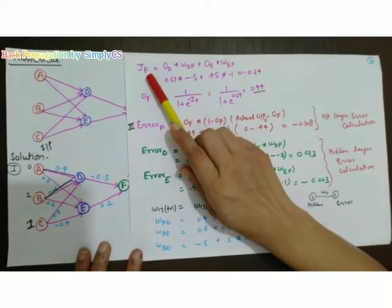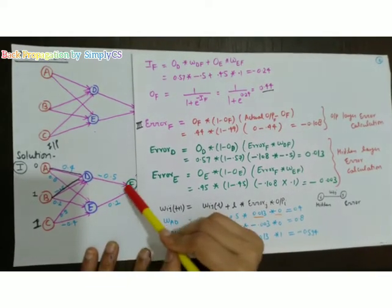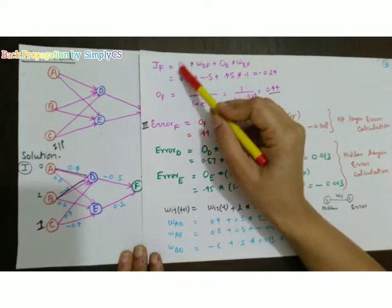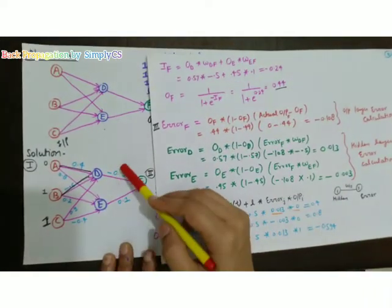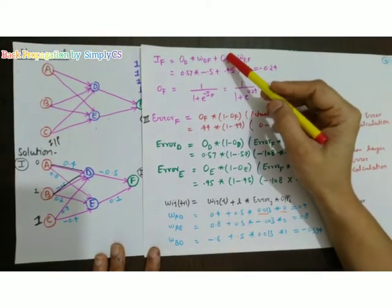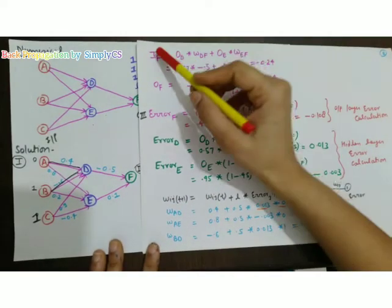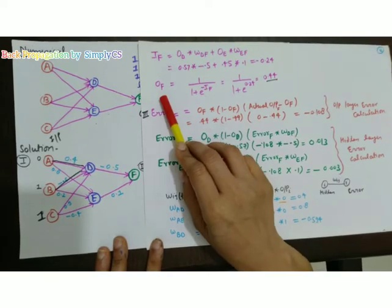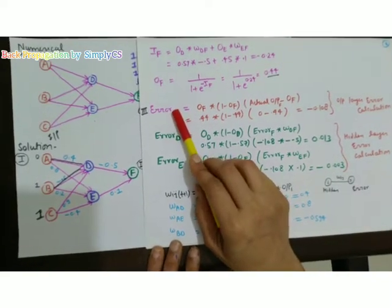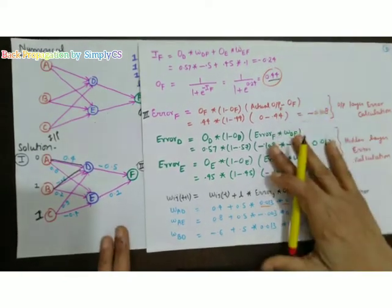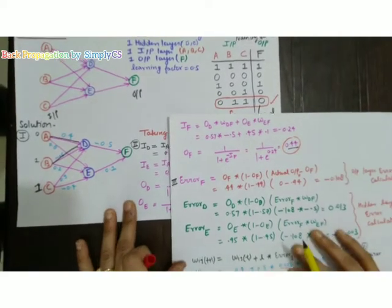The input at f is calculated as: O_d multiplied by W_df — where O_d equals 0.57 — plus O_e (which is 0.45) multiplied by W_ef. Then we calculate the output at f using the sigmoid function. The next step is to calculate the error, because the expected output was 0 but our computed output is 0.44, meaning there is a difference.